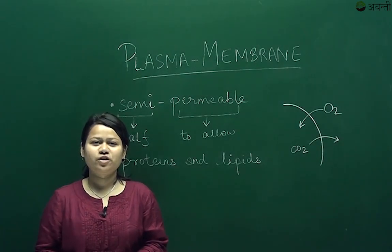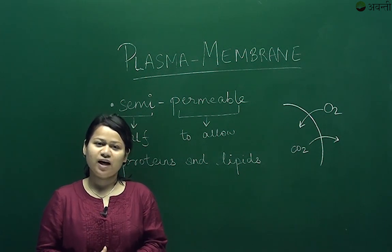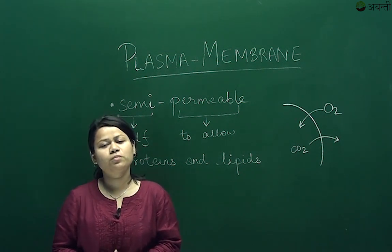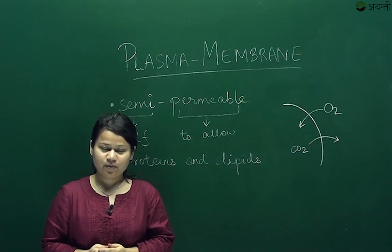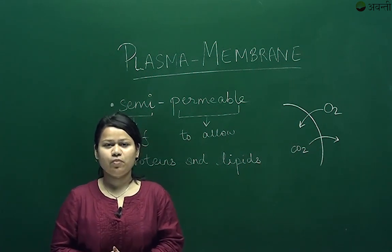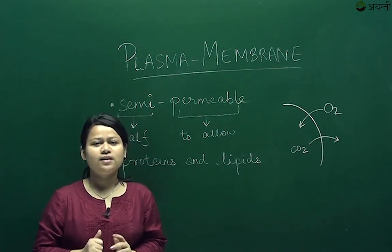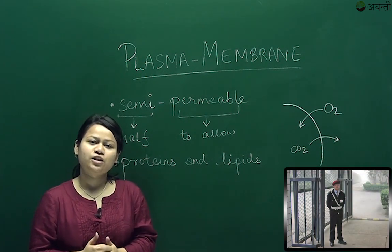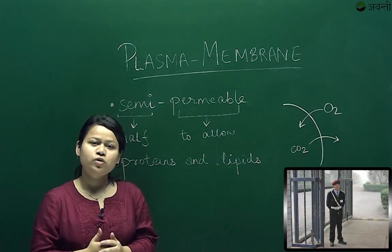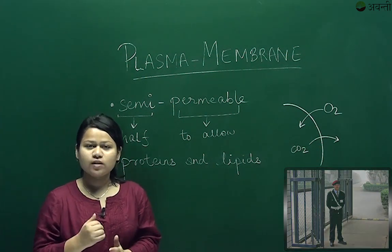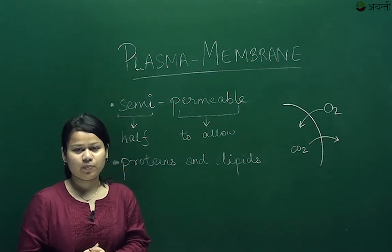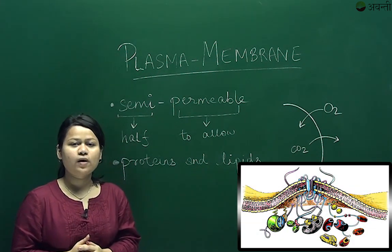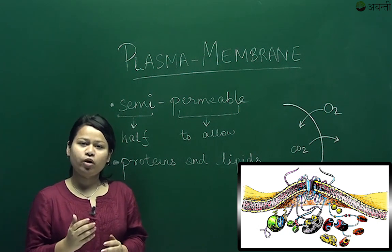Now let's look at the first component of the cell — the plasma membrane. The plasma membrane forms the outer covering of the cell. To understand the plasma membrane, let's look at the security guard in your school. The security guard acts like a checkpoint for students to enter, and for important things of the school not to leave. In the same sense, the plasma membrane also acts like a checkpoint for the cell.